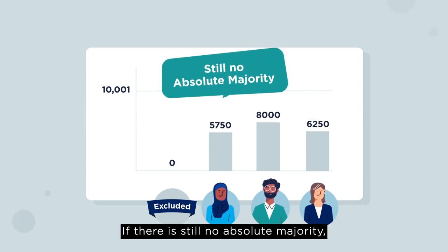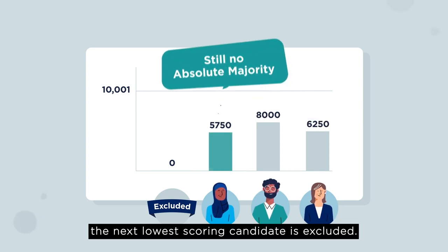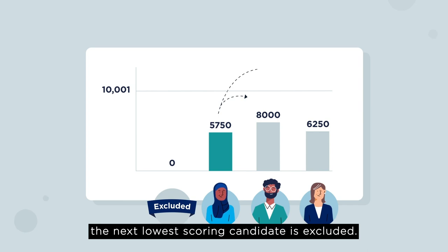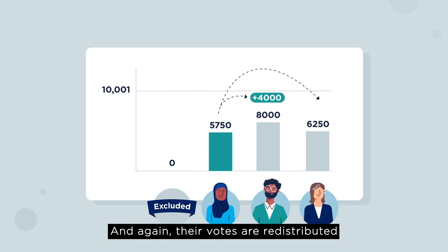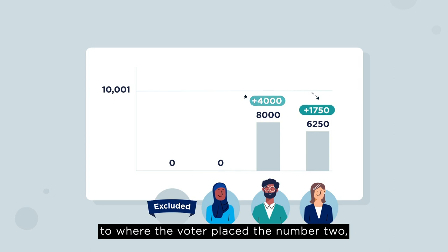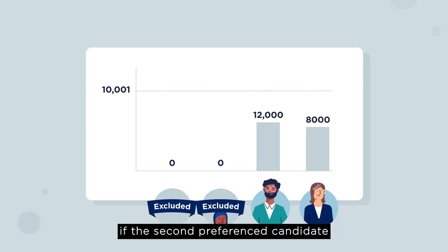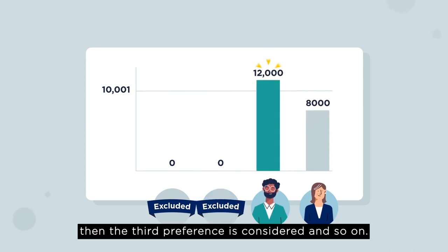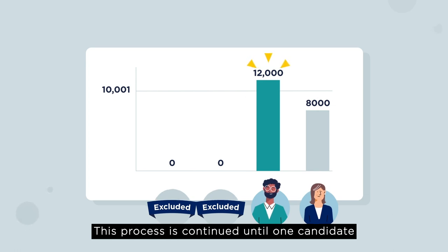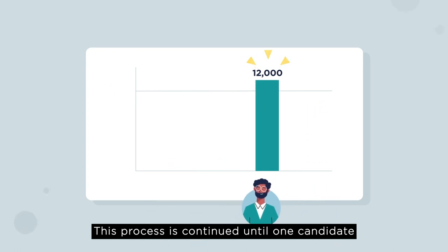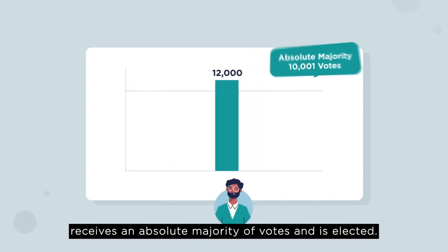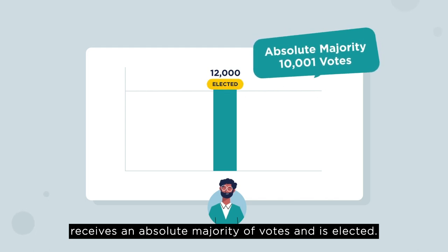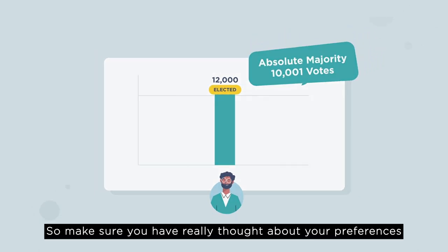If there is still no absolute majority, the next lowest scoring candidate is excluded, and again their votes are redistributed to where the voter placed the number two. If the second preferenced candidate has already been excluded, then the third preference is considered, and so on. This process is continued until one candidate receives an absolute majority of votes and is elected.